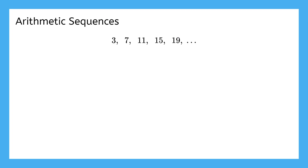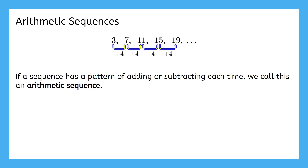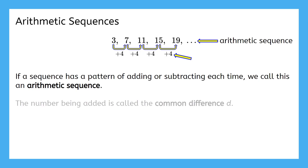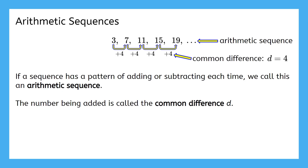Let's start with the arithmetic sequence. Consider the following sequence — what's the pattern here? You'll notice that we need to add 4 each time to get the next number. If a sequence has this pattern of adding or subtracting each time, we call this an arithmetic sequence. We have a special term for this number 4: the number being added is called the common difference, named by the variable d. In this problem, the common difference d is equal to 4.